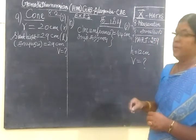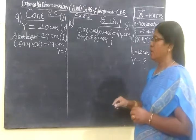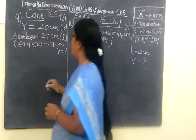Radius is given. Radius equal to 20cm. Slant height. Now we see the cone.